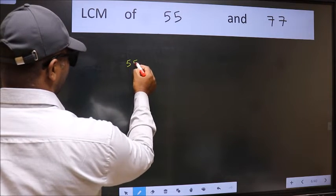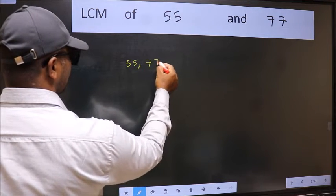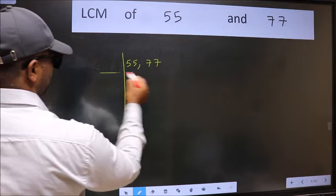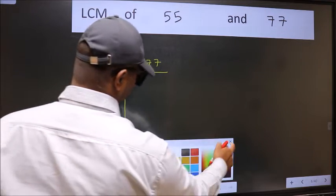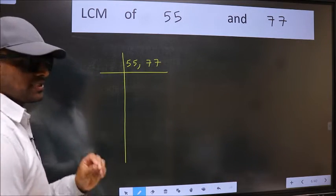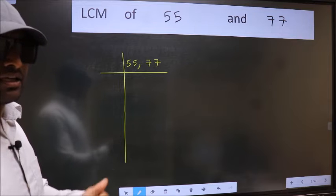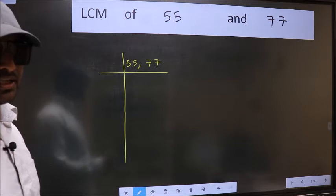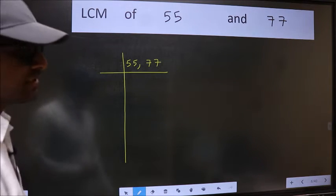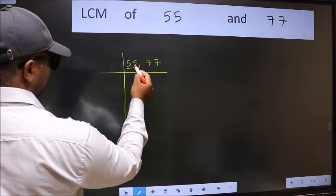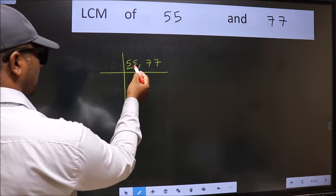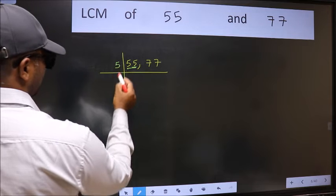55, 77. This is your step 1. Now you should focus on the first number which is 55 here. In this number, last digit is 5, so take 5.